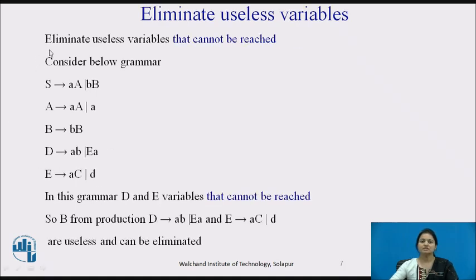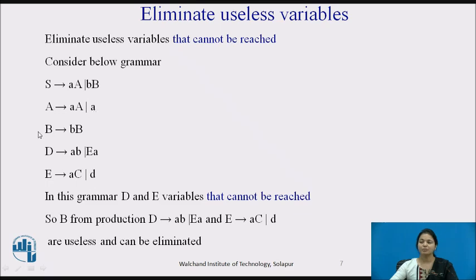The next step is to check whether a grammar production contains non-terminals which cannot be reached while deriving the language. Consider the following grammar: S is producing A, A or B, B. A is producing A, A, A. B is producing B, B. D is producing A, B or E, A and E is producing A, C, D. In this grammar, A and B are used from the starting symbol, but we don't find any path to reach D and E. These variables are nowhere used since they cannot be reached, so the productions of D and E can be eliminated.